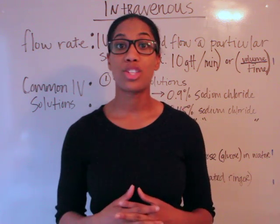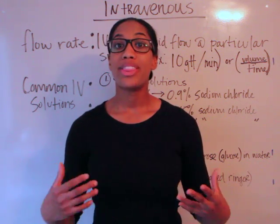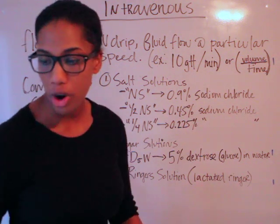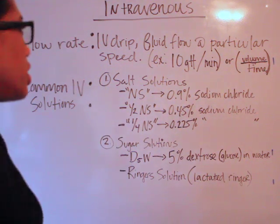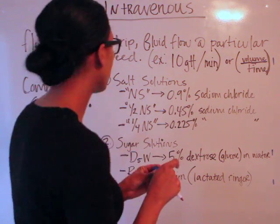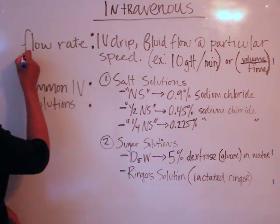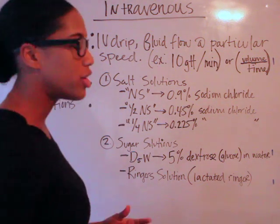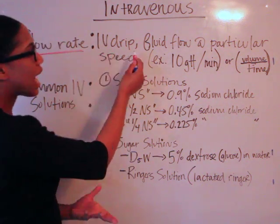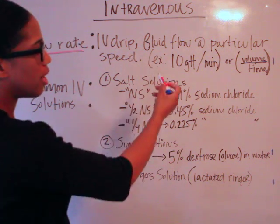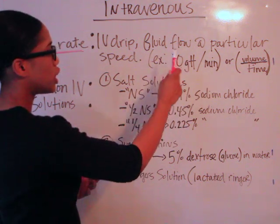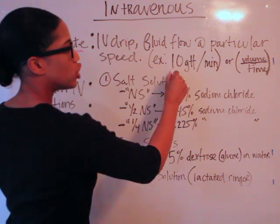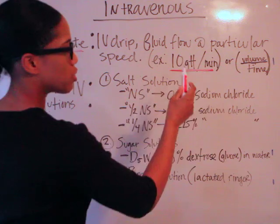So let's go ahead and get started. With intravenous solutions, you have what's called the flow rate. The definition of flow rate is essentially an IV drip — fluid flowing at a particular speed. So for example, you could say 10 drops per minute, and as you may know from studying your SIGs, GTT is also equivalent to drops.